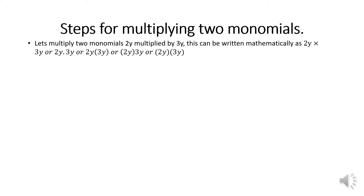How do we multiply two monomials? Let's take 2y multiplied by 3y. This can be written mathematically as: 2y × 3y, or 2y · 3y, or 2y(3y), or 2y(2y)(3y), or (2y)(3y). Those are the different ways we write our mathematical expressions.